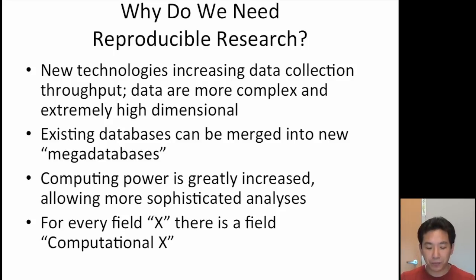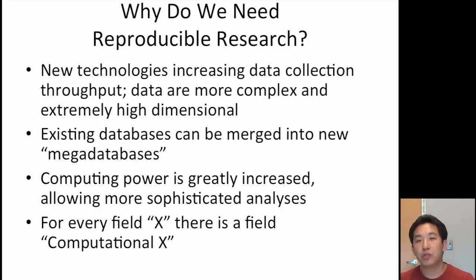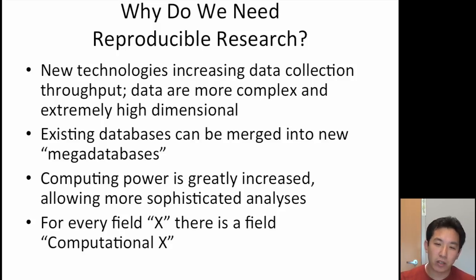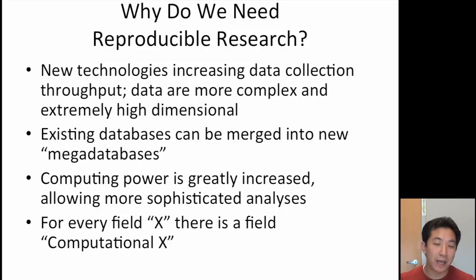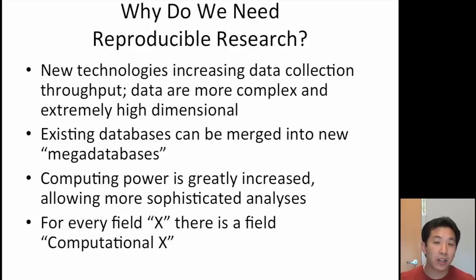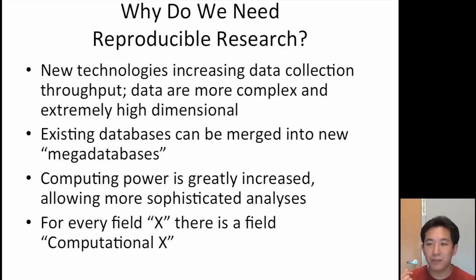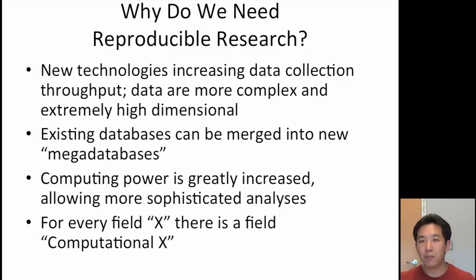In addition to allowing us to create new data sets, computing power allows us to do more sophisticated analyses. The models we fit and the algorithms we run are much more complicated than they used to be, and having a basic understanding of these algorithms is difficult even for a sophisticated person. Understanding what someone did in an analysis will require looking at code and the computer programs people used. The bottom line is that for every field X, there is now a computational X — computational biology, computational astronomy, computational whatever you want.